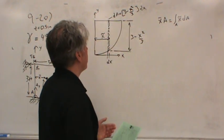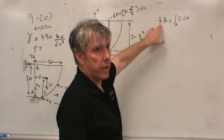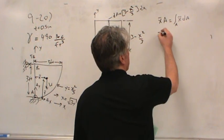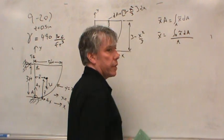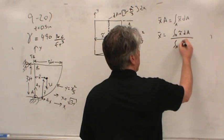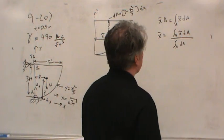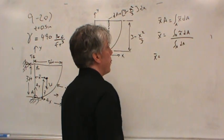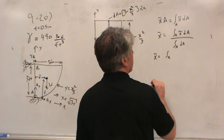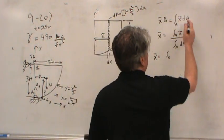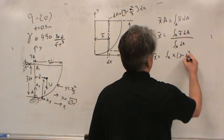We can calculate the total area by integrating the differential areas over the entire area. For our particular case, expanding this: we integrate along the x-coordinate from 0 to 3 feet, taking x times the differential area (3 − x²/3) dx. For the denominator, we also integrate from 0 to 3 along (3 − x²/3) dx.